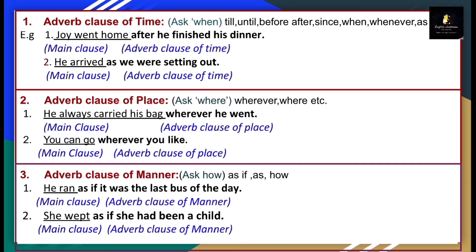Our second type is adverb clause of place. As per the name, it denotes a particular place. We ask the question 'where'. Example: 'He always carried his bag wherever he went.' 'He always carried his bag' is the main clause. 'Wherever he went' is your subordinate clause. When I ask 'where did he always carry his bag?', the answer is 'wherever he went' — adverb clause of place. Another example: 'You can go wherever you like.'